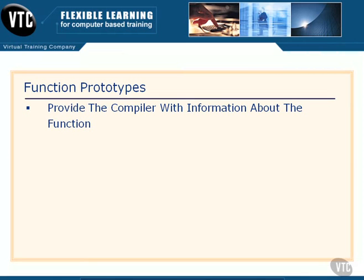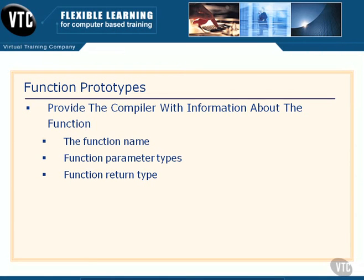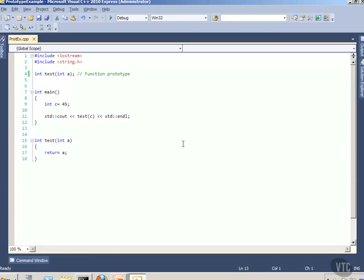A function prototype simply informs the compiler a little bit about the function that's going to be used somewhere else in the program. A function prototype contains the name of the function, the parameter types that are being expected by the function, and then the function return type. Now, why do we need these? Well, the best way to explain that is to actually go out and look at some code.